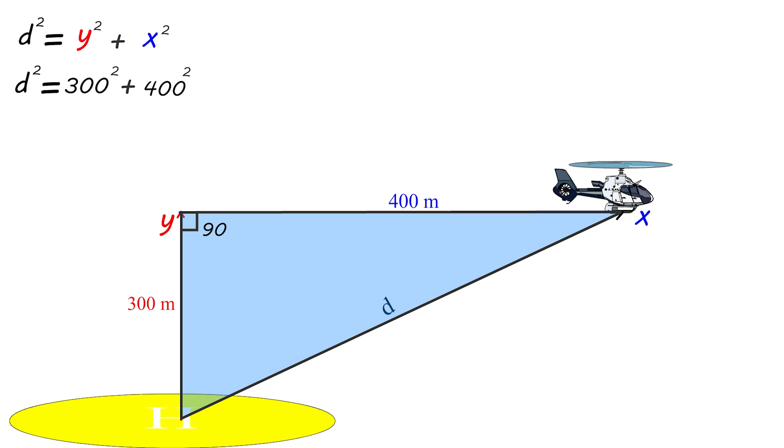Therefore, d square equals 90,000 plus 160,000. d square equals 250,000. So d equals square root for 250,000. d equals 500 meters.